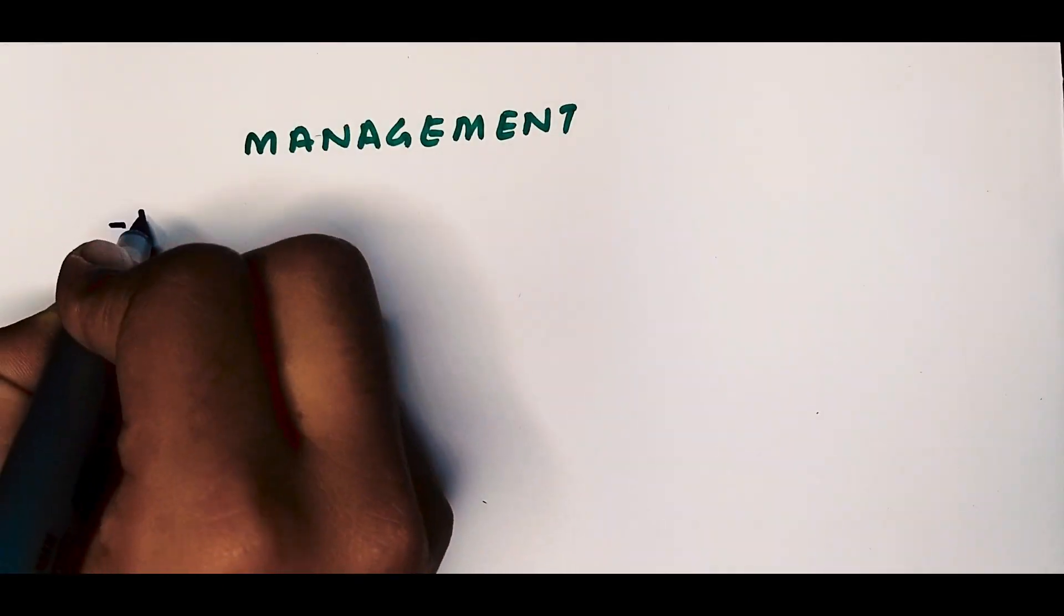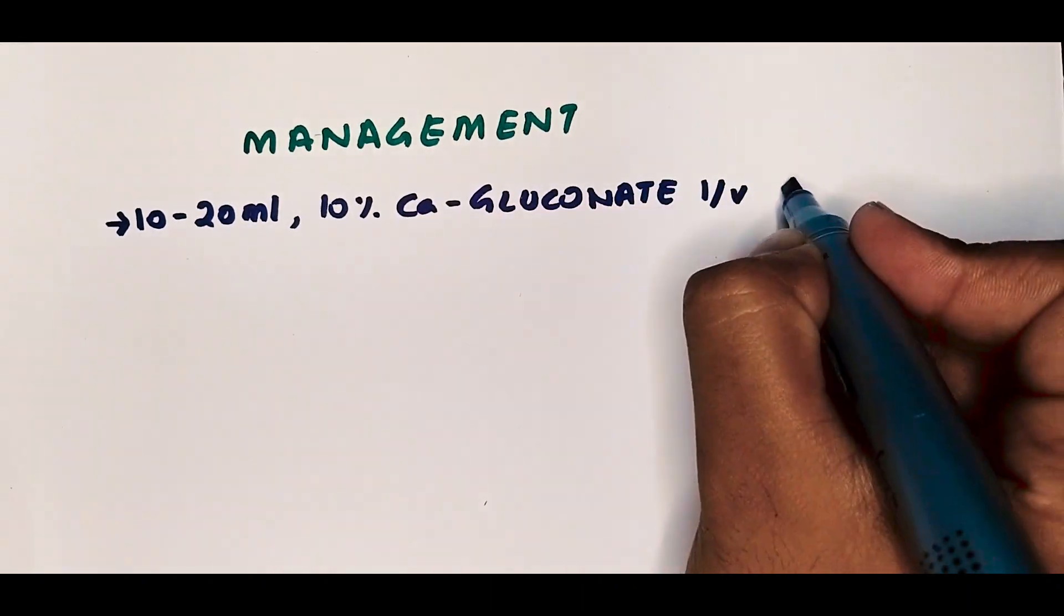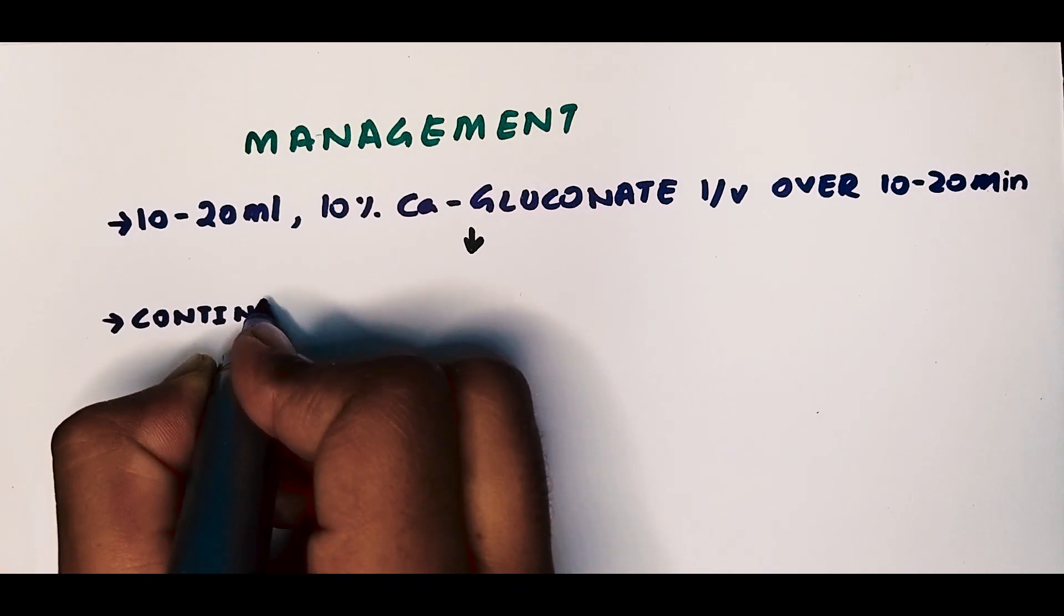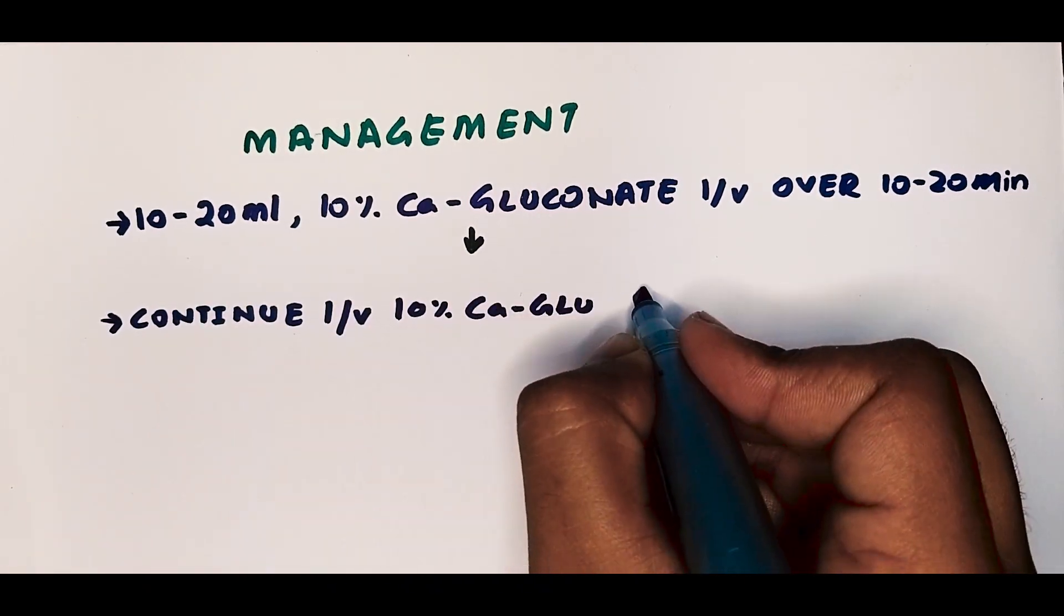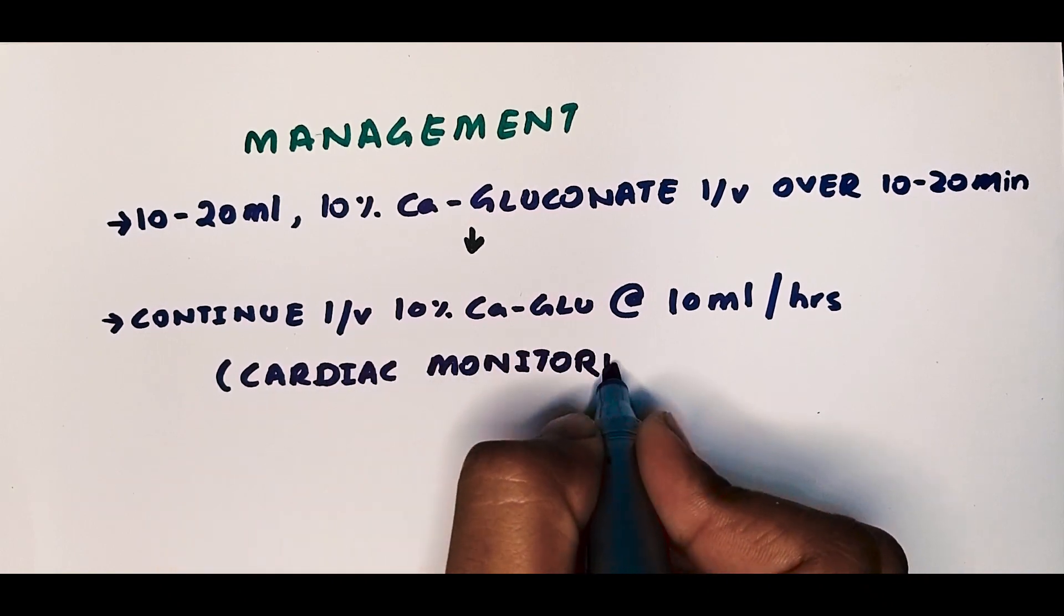When managing such a patient, we start off by 10-20 ml of 10% calcium gluconate, given intravenously over 10-20 minutes, followed by a continuous IV infusion of 10% calcium gluconate at 10 ml per hour. And throughout all of this, we need to monitor the cardiac ECG as well.